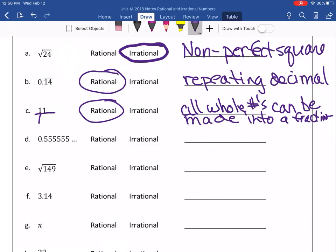So, all whole numbers, whether positive or negative, so basically all integers, are rational because they can be made into a fraction by putting them over a 1.